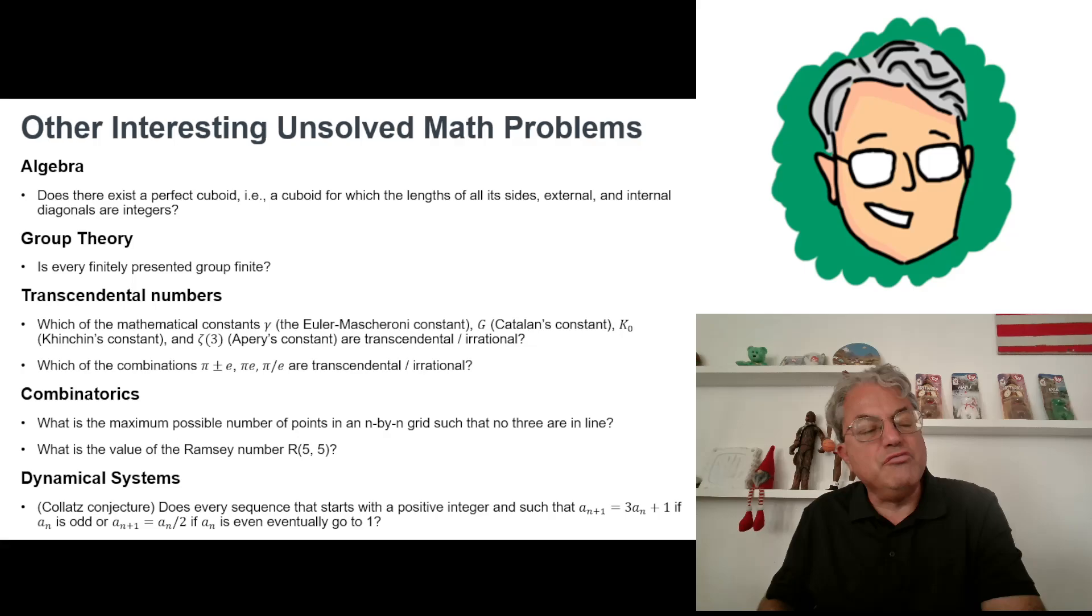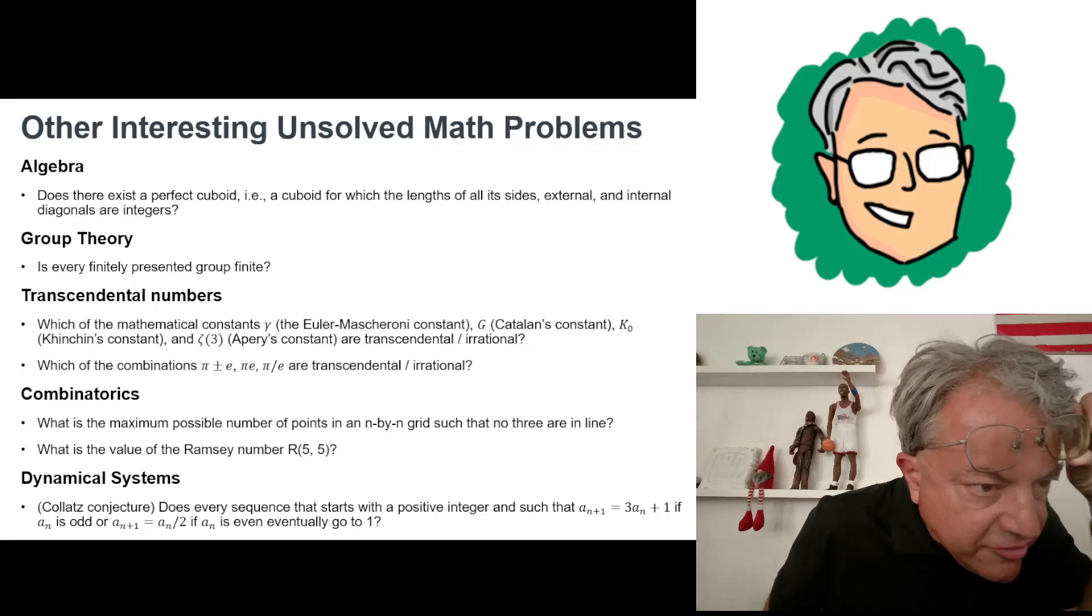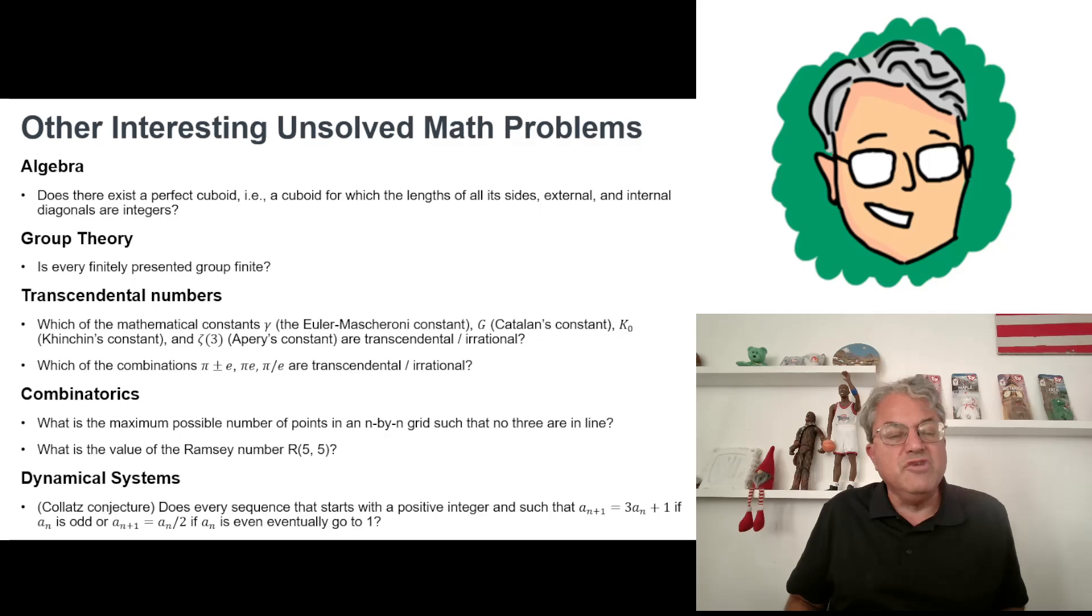I came up with my own list of some other really interesting unsolved math problems. In algebra, there's a perfect cuboid problem. The question is whether there exists a perfect cuboid. Just imagine you had a rectangular brick, and all of its sides and all of its external and internal diagonals all have to have integer length. So that's seven numbers that all have to have integer length. I think it's known that you can do six but not seven.